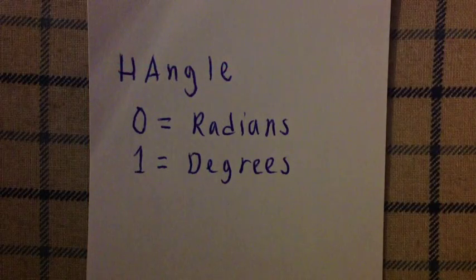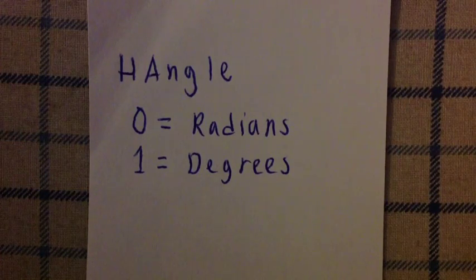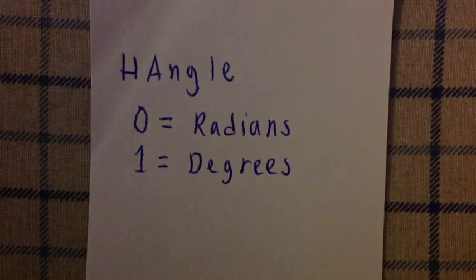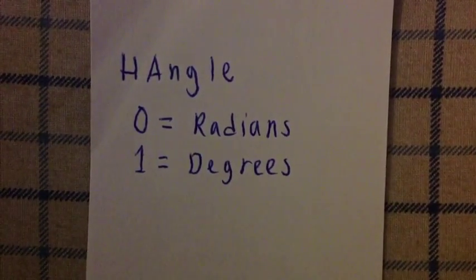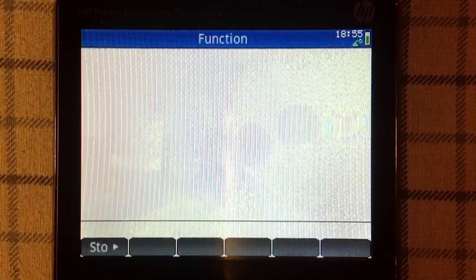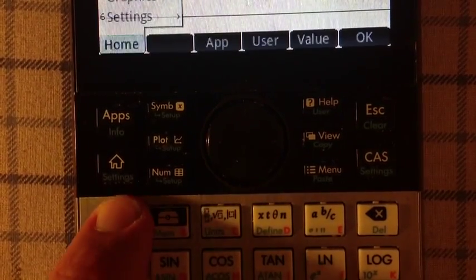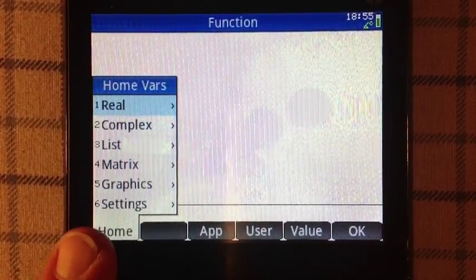The first technique is setting the home variable angle setting, which is symbolized by the variable Hangle — H and A are both capitalized. Hangle has two different values: 0 for radians mode and 1 for degrees mode. Hangle can be found by pressing the variables key and then going to the home submenu, the softmenu.